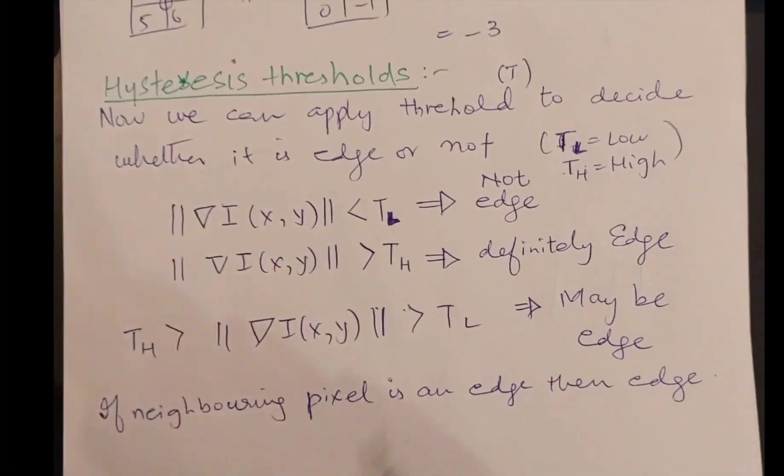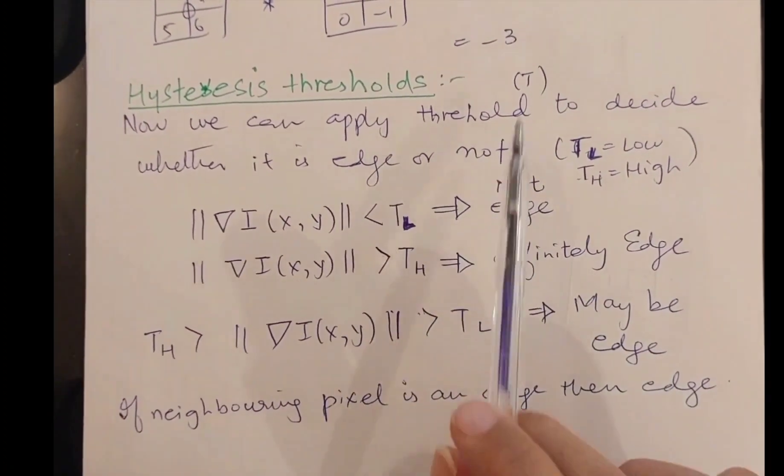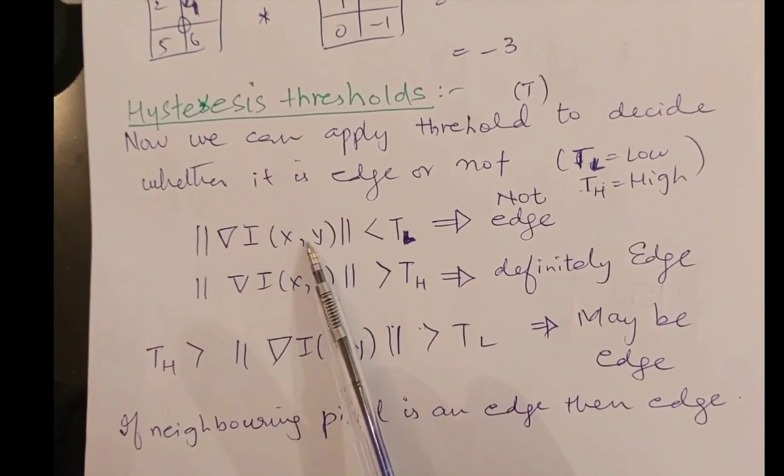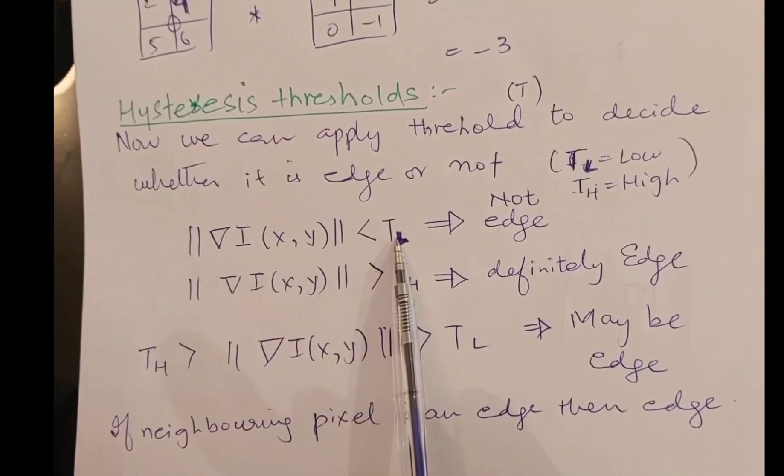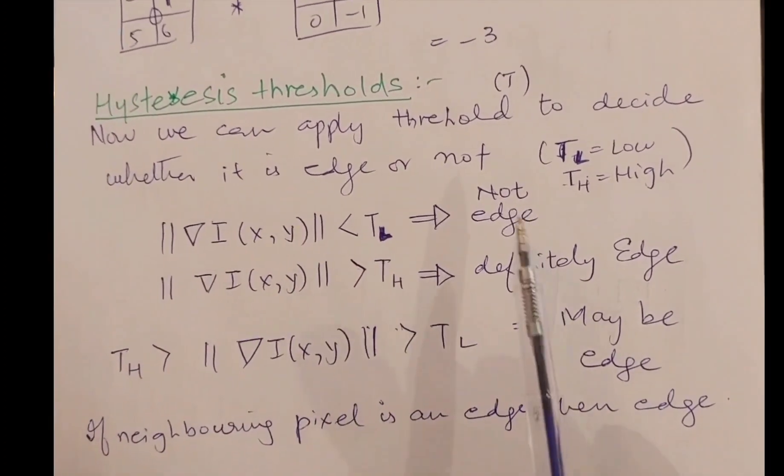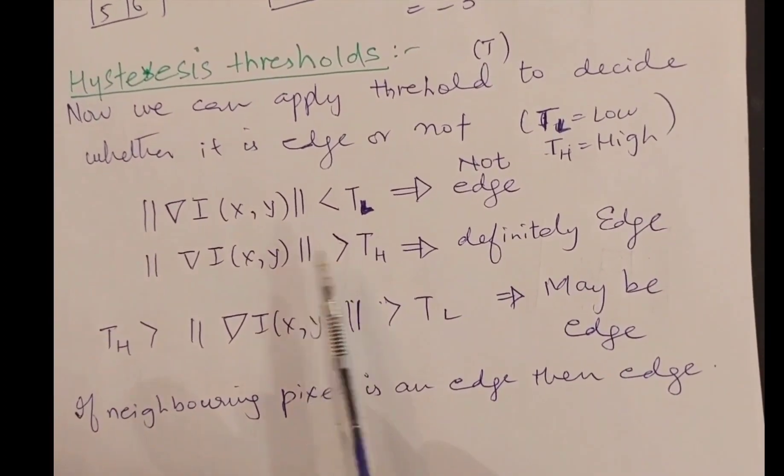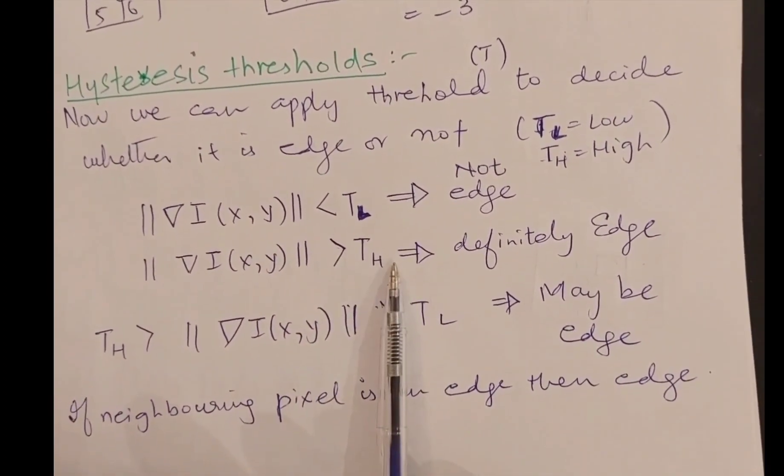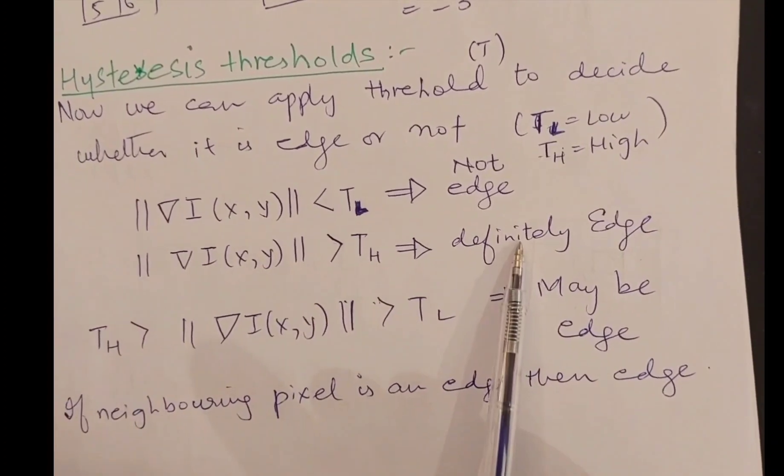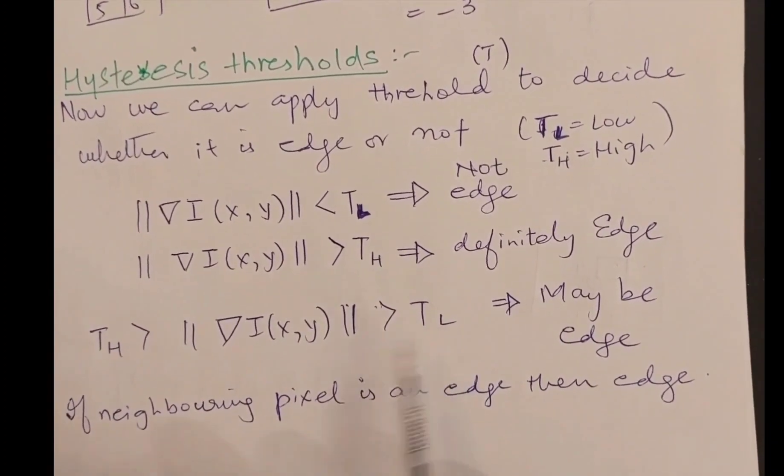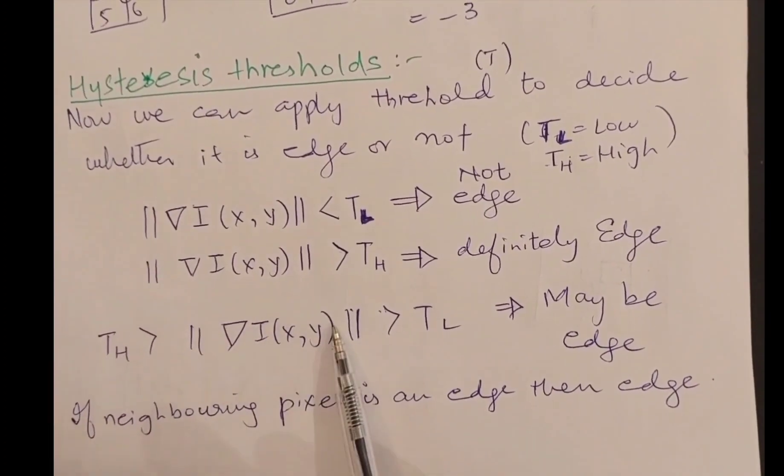Hysteresis thresholding says that there are two values of thresholds: one is low threshold and one is higher threshold. If the calculated value, the magnitude, is lower than the lower value of threshold, then that is not an edge. If the calculated value is higher than the upper value of the threshold, then it is definitely an edge.